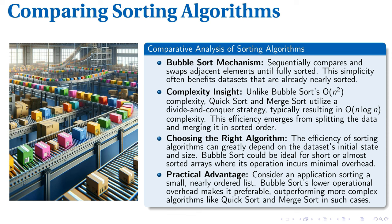These efficiencies, however, pivot on the initial size and state of the dataset. A striking practical advantage of bubble sort lies in its potential to outperform more complex quick sort and merge sort when dealing with small, nearly ordered lists. Simplicity, in such cases, prevails over complexity, making bubble sort a robust choice in the realm of sorting algorithms.